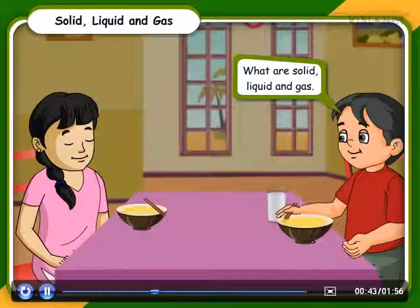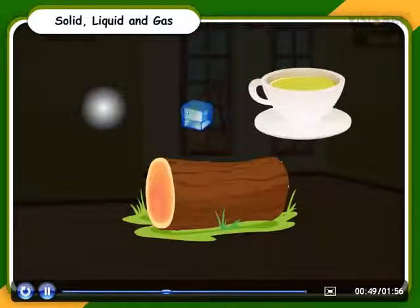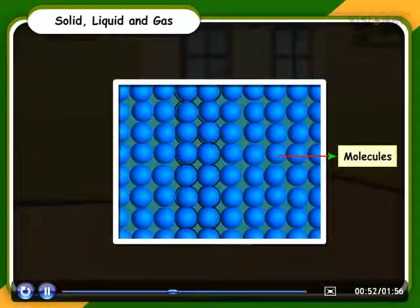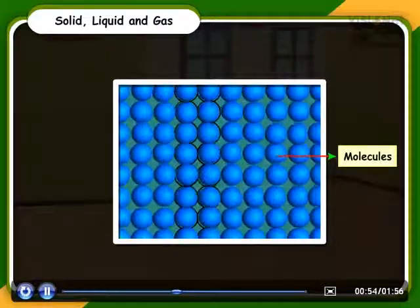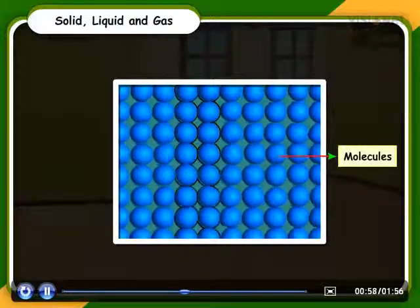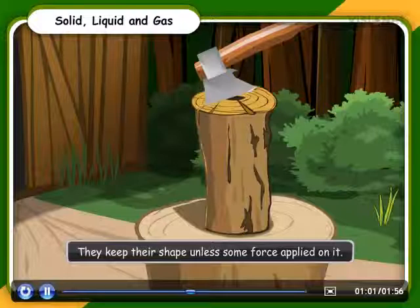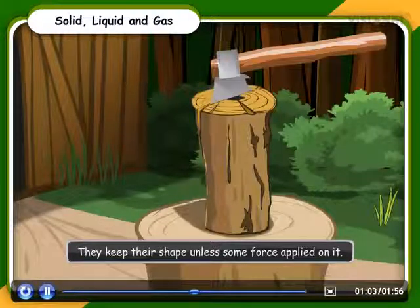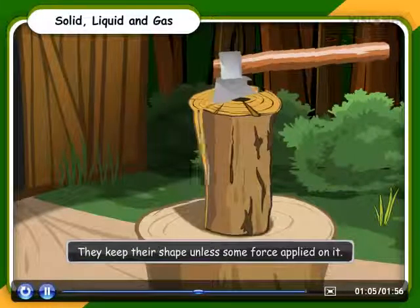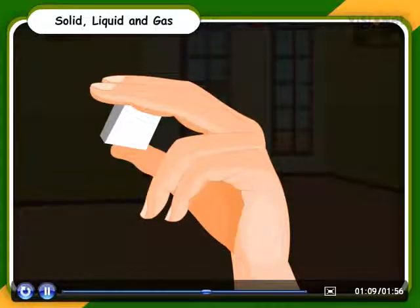What are solid, liquid and gas? Can you explain me? Sure. Solids have a fixed shape and are hard. The molecules of solids are tightly packed, usually in a regular pattern, and all molecules touch together. They keep their shape unless some force is applied on it. Solids do not flow. Solids cannot be compressed, except rubber.